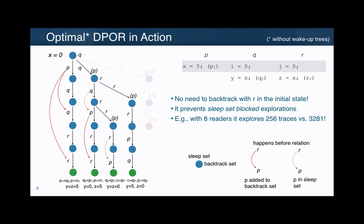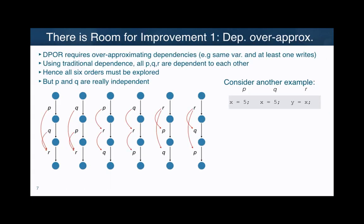In general, it may look like just three states reduced, but when you put this into bigger examples — for instance, instead of two readers you have eight readers — then this difference is huge. It's like getting 256 traces versus more than 3,000. Small improvements in these algorithms can produce huge improvements in larger explorations. And this is now where we enter the picture. We observe two different places where there is room for improvement.